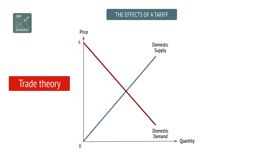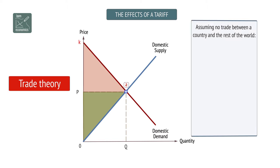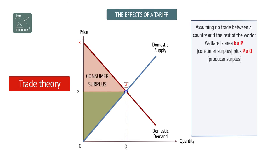Assuming no trade between a country and the rest of the world, welfare is area KAP — consumer surplus — plus PA0, producer surplus.